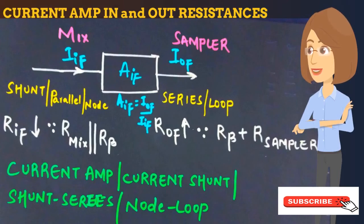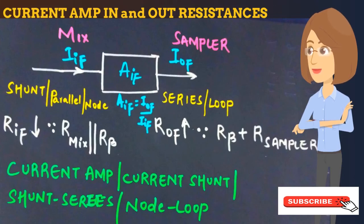The current amplifier, also called the current-shunt or shunt-series amplifier, uses a series connection between the sampler and feedback network at the output and a parallel connection between the mixer and feedback network at the input. Both the output signal and input signal are current. Since there is a series connection at the output, the output resistance increases. Since there is a parallel connection at the input, the input resistance decreases.